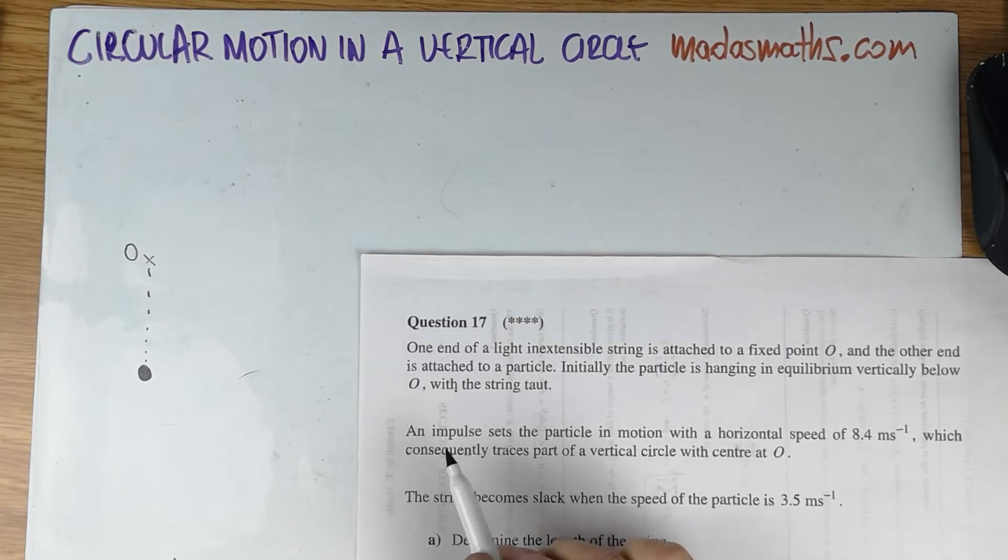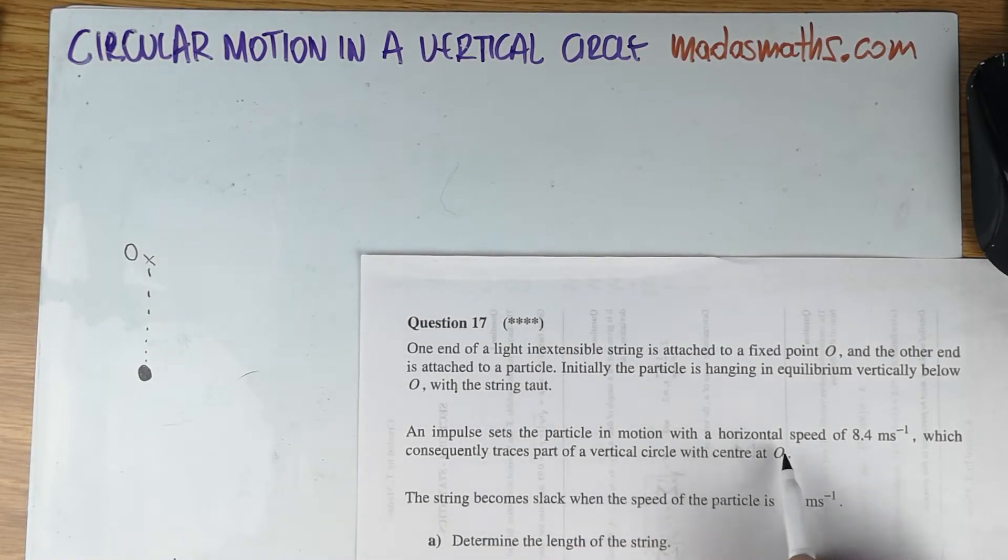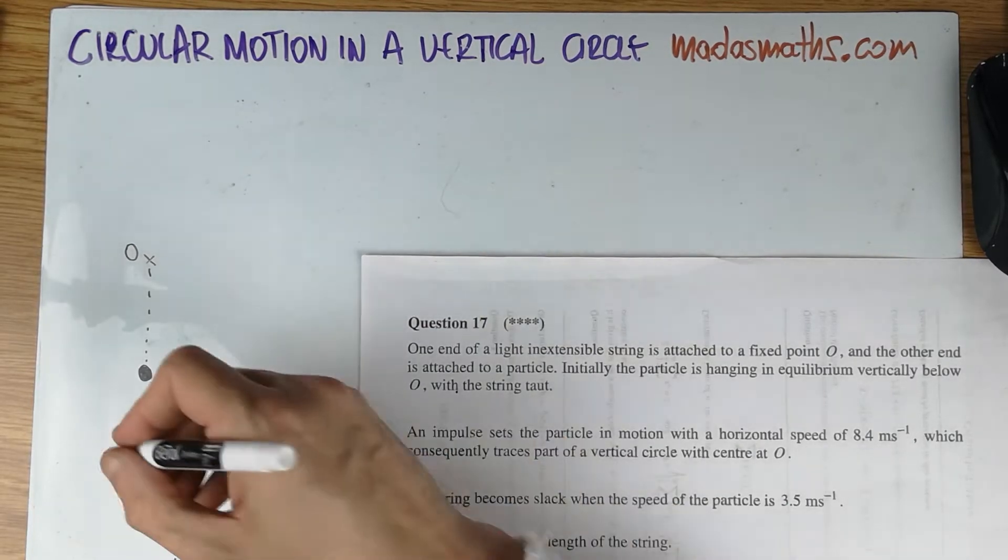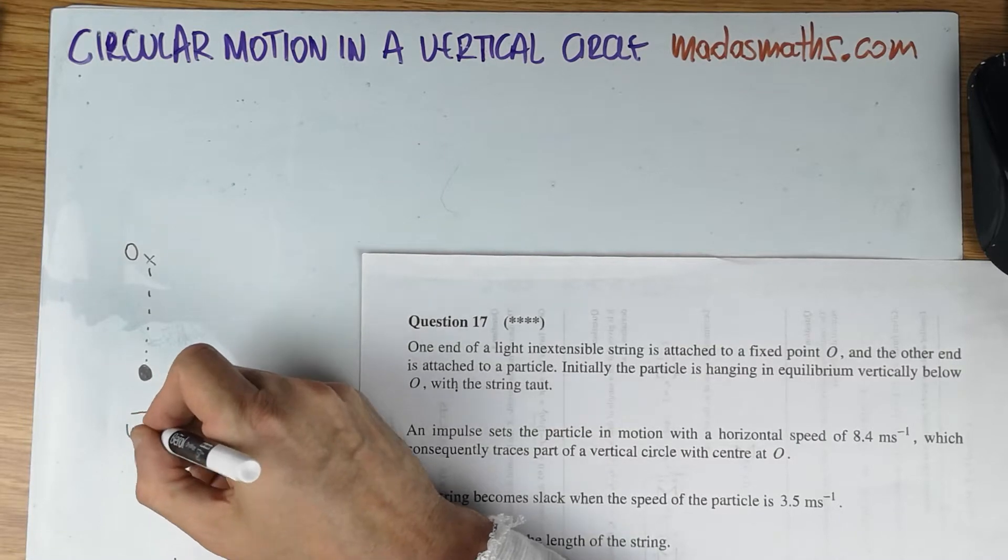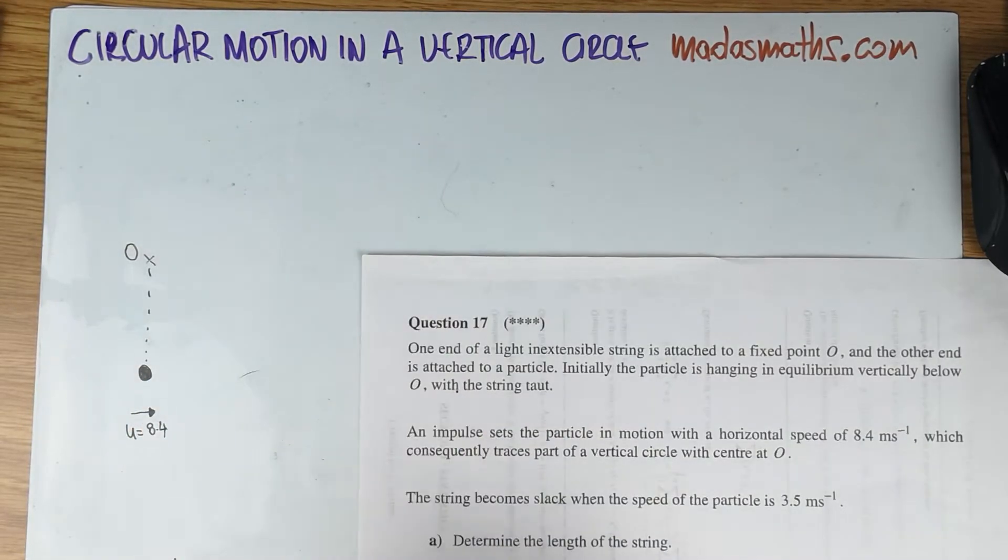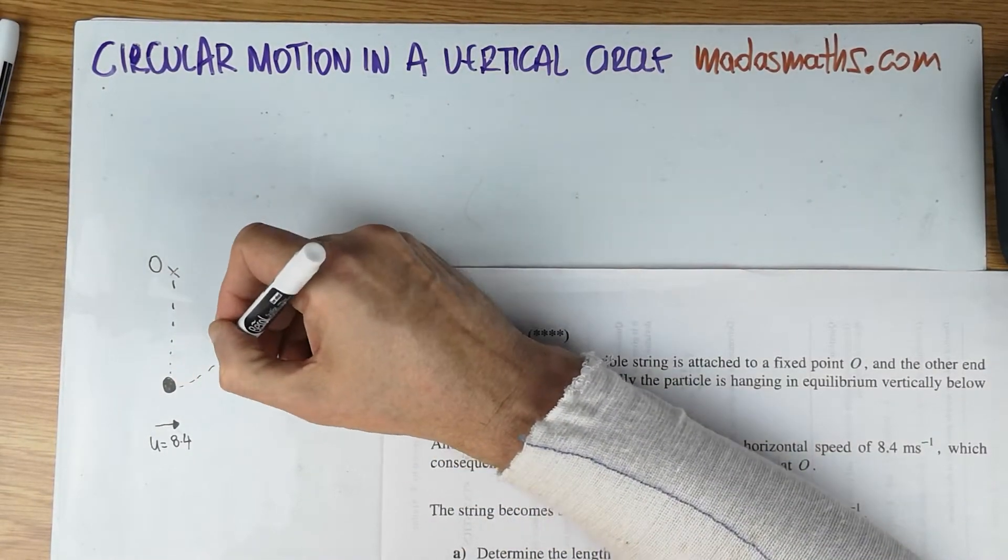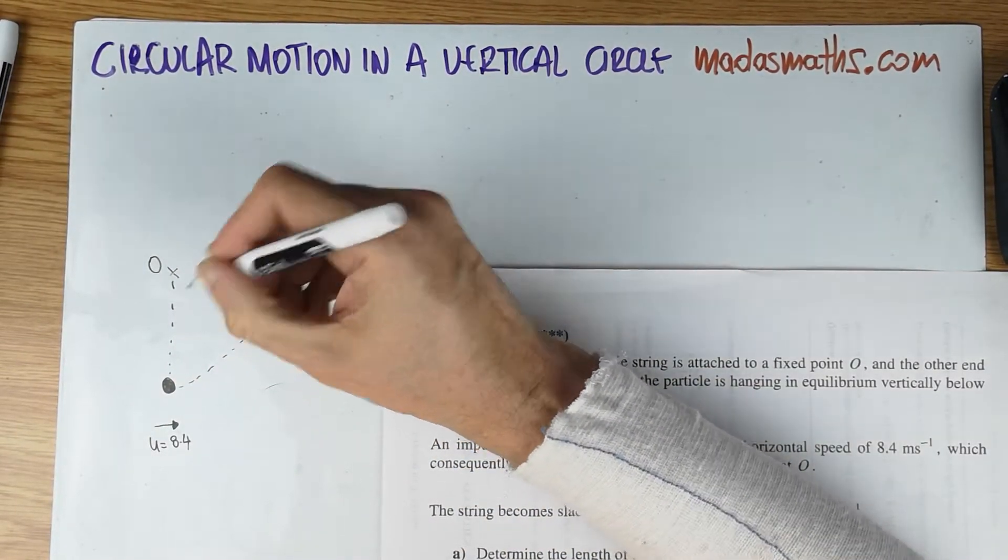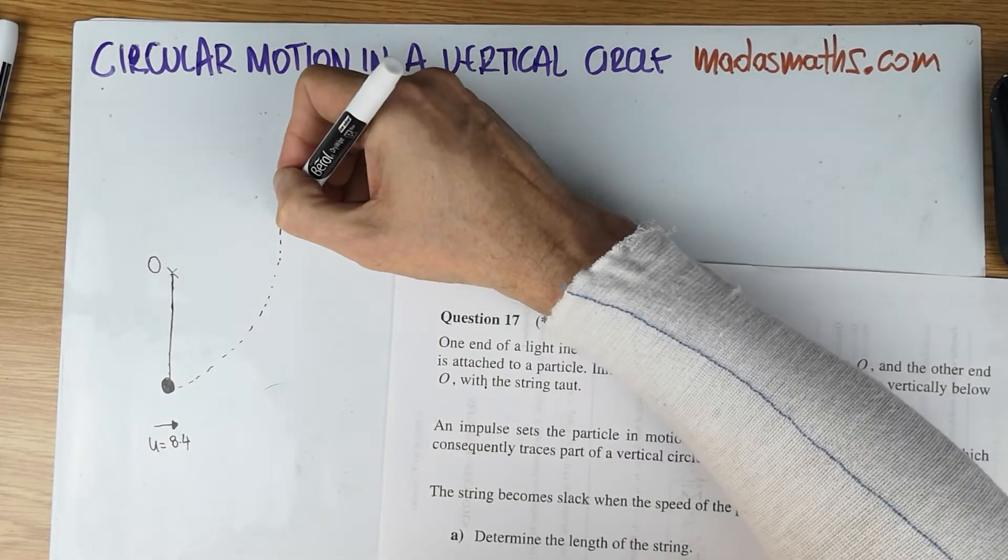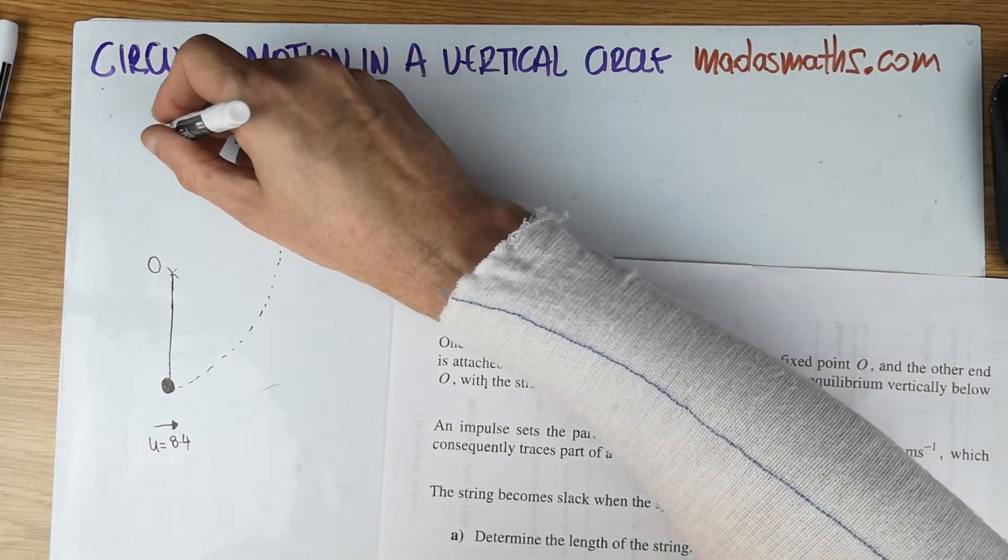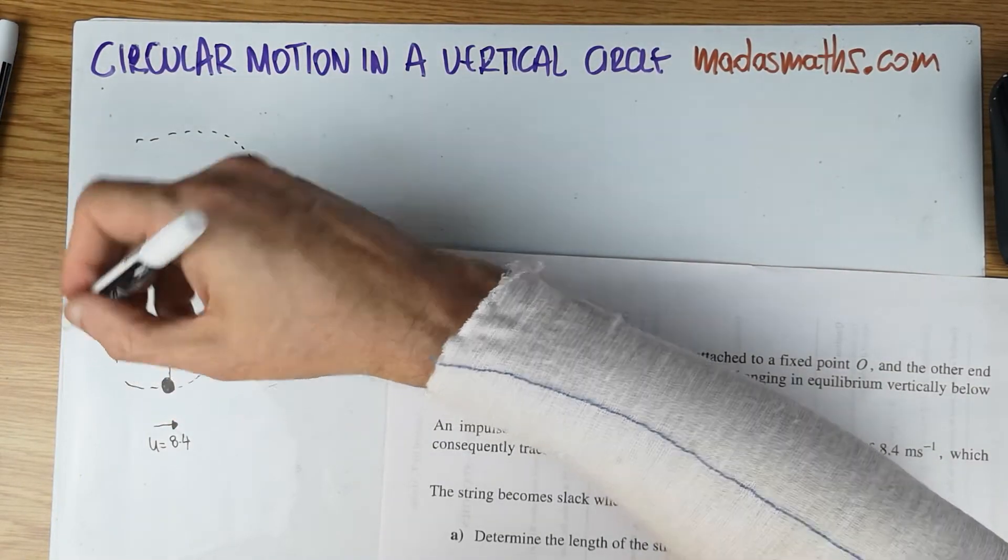An impulse sets the particle in motion with a horizontal speed of 8.4. So I'm going to mark the speed here. Usually that's the initial speed, so I'm going to mark it also as U, 8.4 meters per second, which consequently traces part of a vertical circle. So it doesn't go all the way around. So at some point, the string becomes slack. So in fact, you should mark it as a string there, so that it would be a full circle, of course, or an egg, as I'm drawing it.